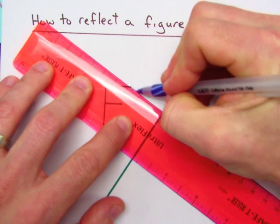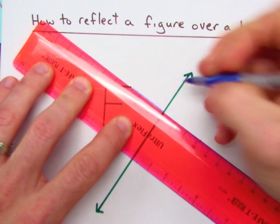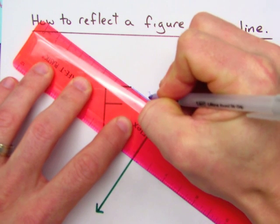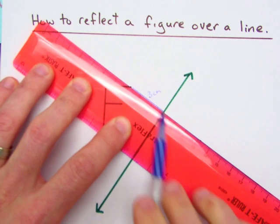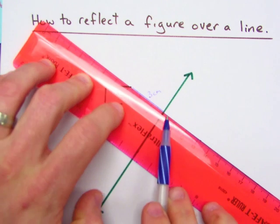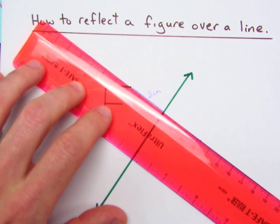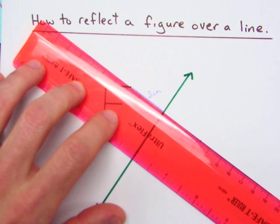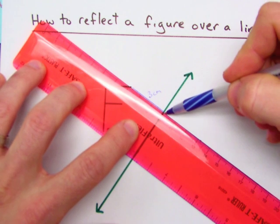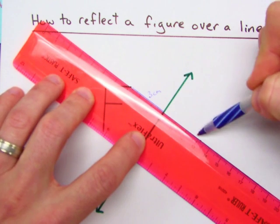In my example, it looks like it's about three centimeters. And I always use centimeters because it's a lot easier to get it to the nearest tenth of a centimeter. What I want to do now is go perpendicular three centimeters out the other direction.